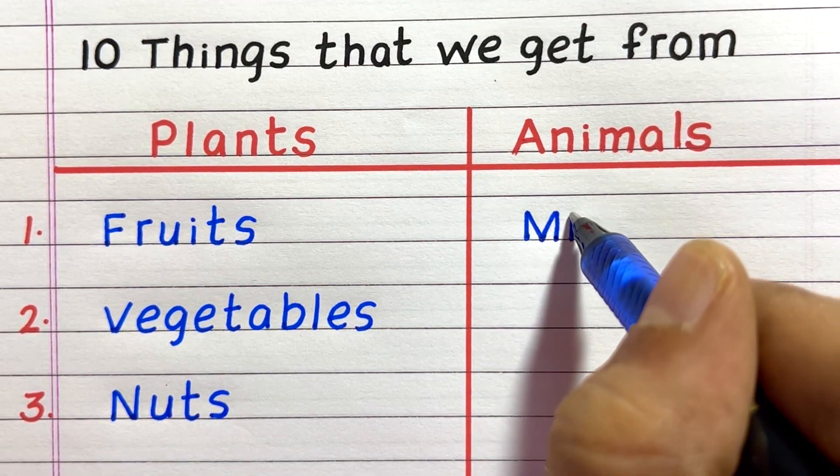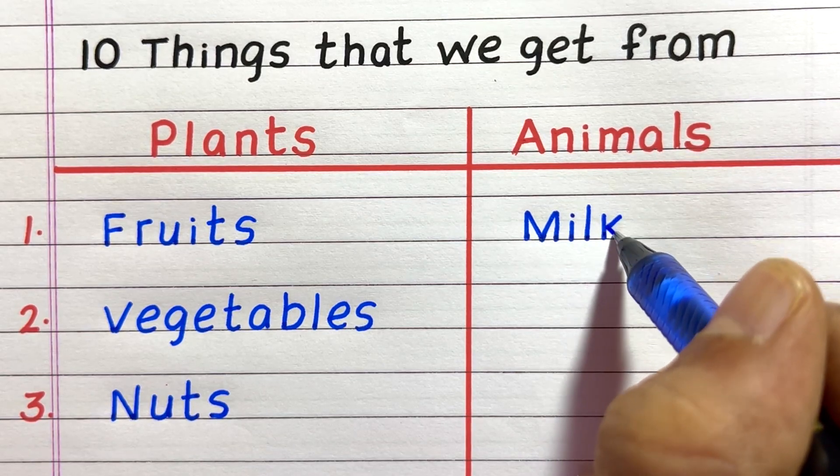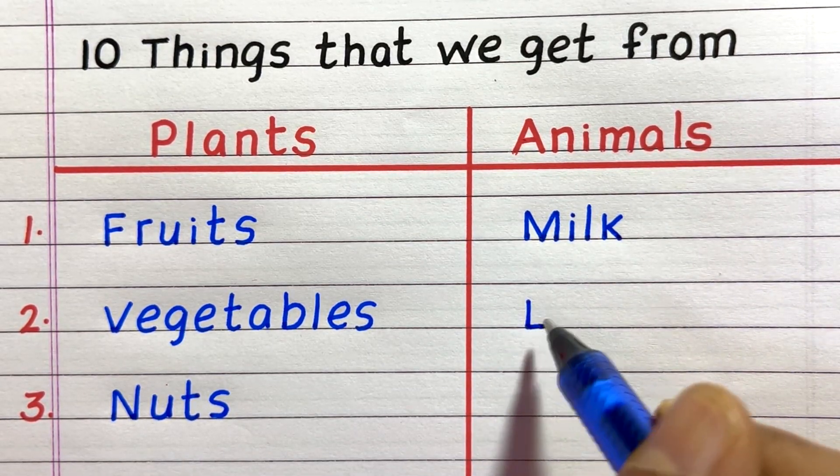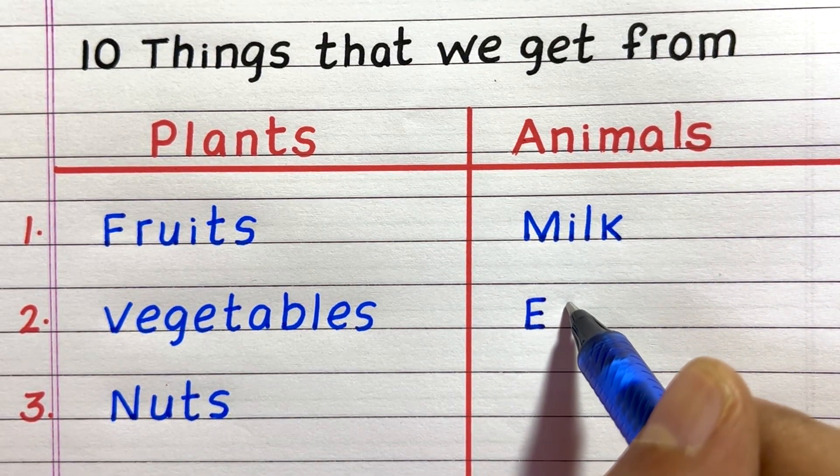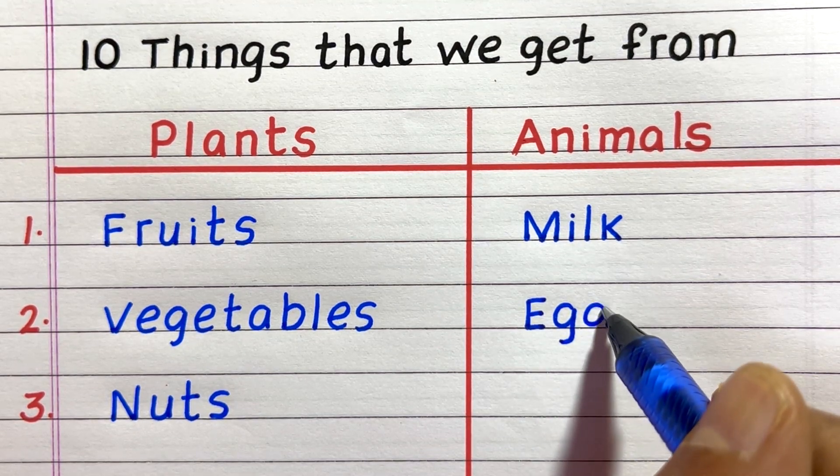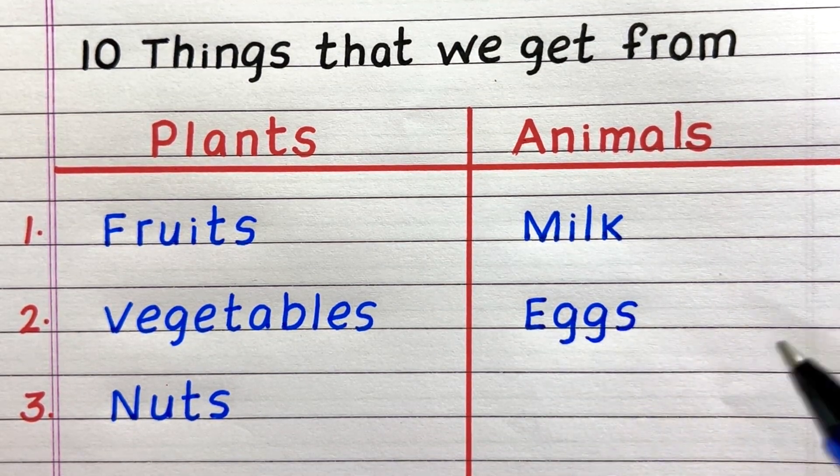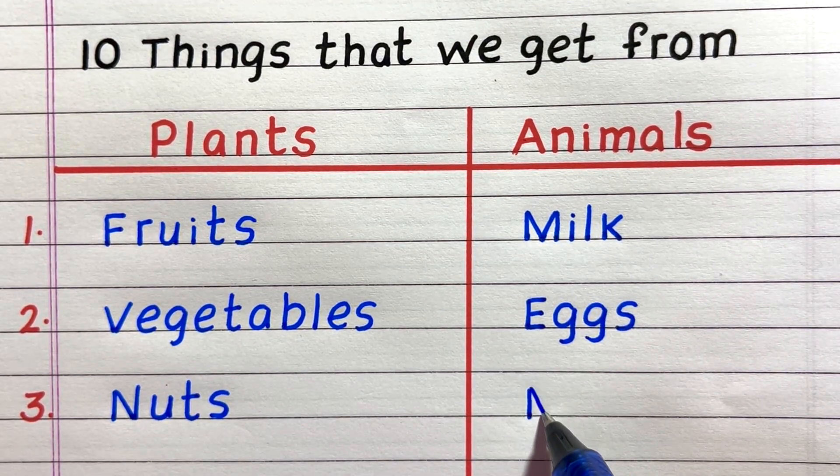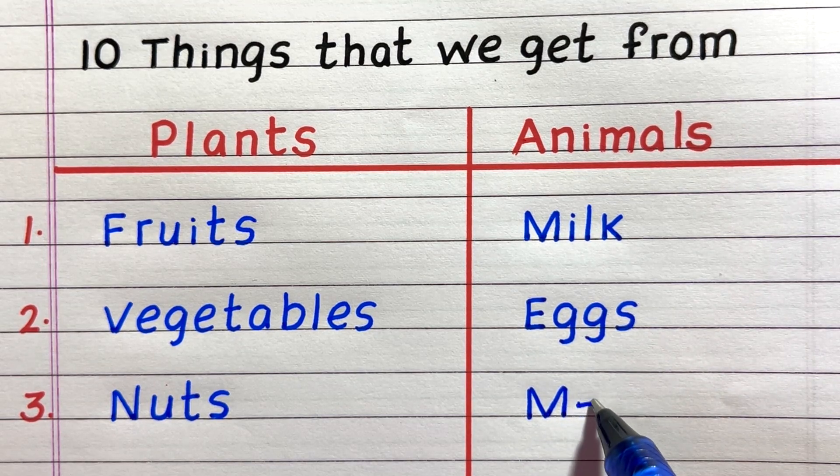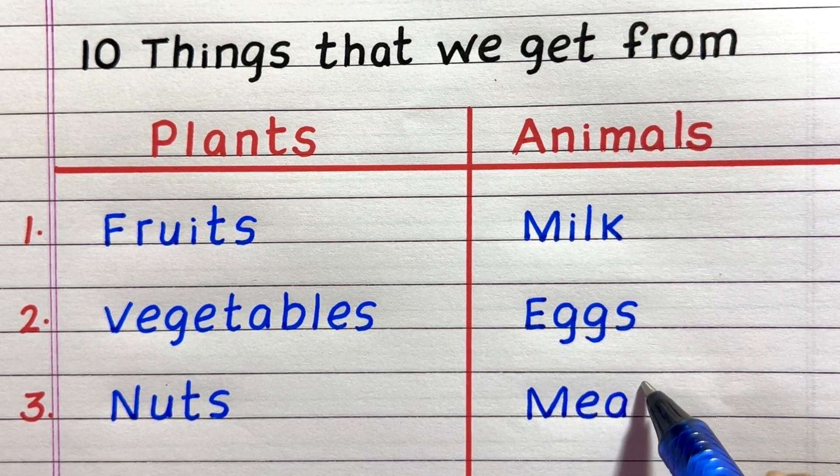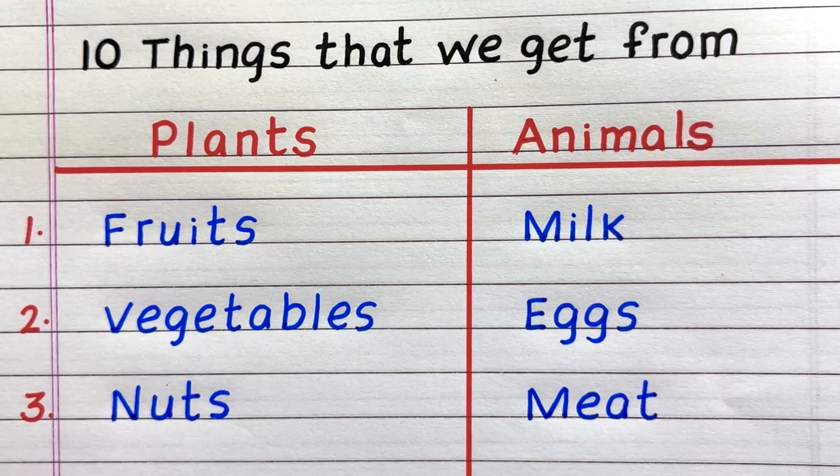First thing that we get from animals is milk. Second, eggs. Third, meat.